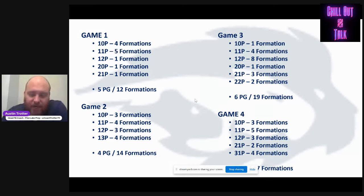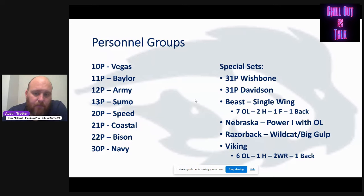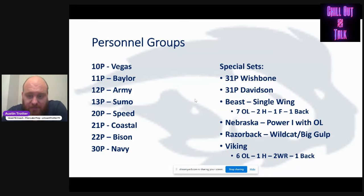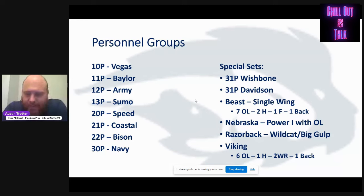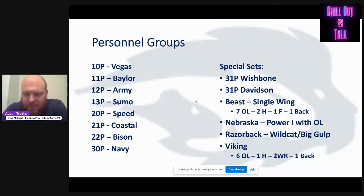Here are all the different personnel groups. Our guys name most of our stuff. We use 10, 11, 12, 13, 20, 21, 22, and a 30 personnel set. We've got some special sets — we lined up in the wishbone at times. Our 31 'Davidson' is based off of Davidson College. 'Beast' is a single-wing set — a retired coach with 50 years of experience pushed me to use it in certain situations. 'Viking' is one of my favorites: a 6-0 with one H-back and two Y's in the backfield. 'Razorback' was primarily a two-point goal-line set — a combination of a wildcat and Mike Leach's 'Big Goal.'